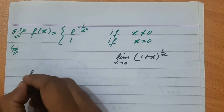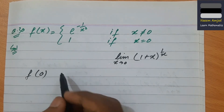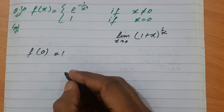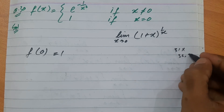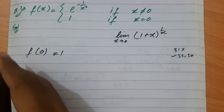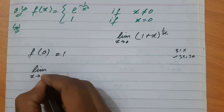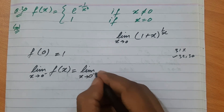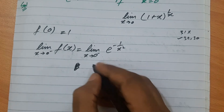f(0) find करते हैं: function में x=0 directly put करें तो function = 1। Note: Q30, 31, 32 में direct limit apply नहीं करेंगे, left और right limit से करेंगे। Left limit apply करते हैं: limit x→0⁻ f(x) = limit x→0 e^(−1/x²)।